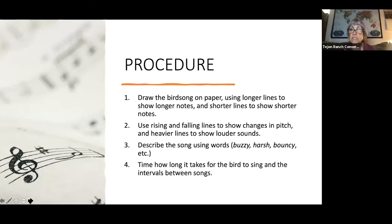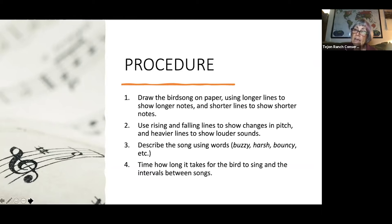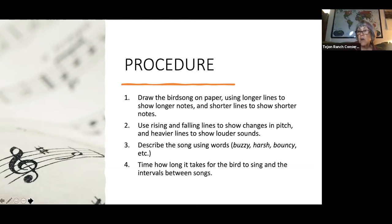The basic procedure will go like this. You're going to draw the bird song on paper using longer lines to show longer notes and shorter lines to show shorter notes. You're going to use rising and falling lines to show changes in pitch, and heavier lines to show louder sounds. You're going to describe your song using words like buzzy, harsh, bouncy, that kind of thing. And you're going to time how long the song is and how long the interval is between repeated songs.